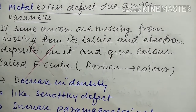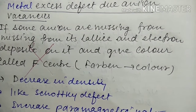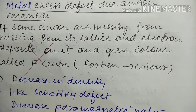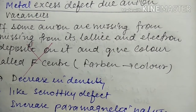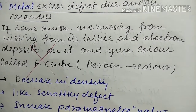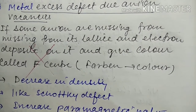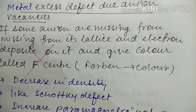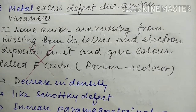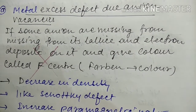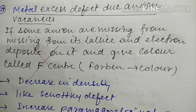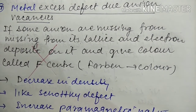This type of defect is seen in d-block elements and their compounds. This was the last defect covered today. The remaining defects and imperfections of crystal will be covered in the next video. Thank you.